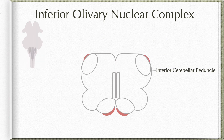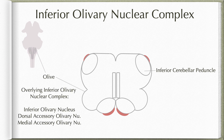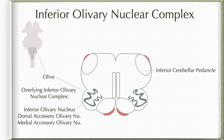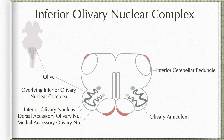Coming to the inferior olivary nuclear complex — this is a group of precerebellar nuclei underlying the olives. The largest nucleus is the inferior olivary nucleus itself, which is a hollow, irregularly crenated mass of gray matter with its hilum facing dorsomedially. This nucleus is surrounded by white matter called the olivary amiculum, mainly contributed by the central tegmental tract. The complex also includes the dorsal accessory olivary nucleus and the medial accessory olivary nucleus.